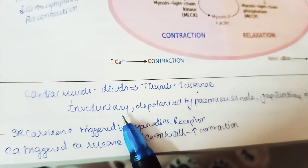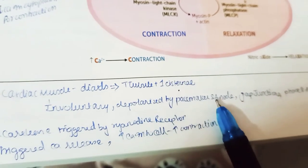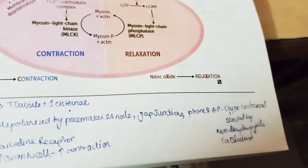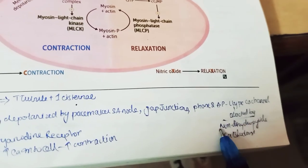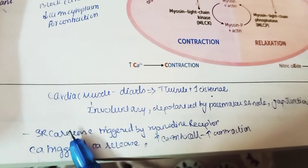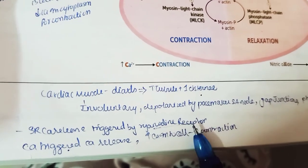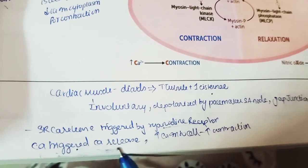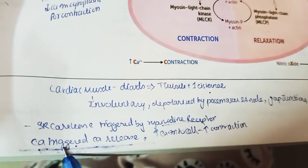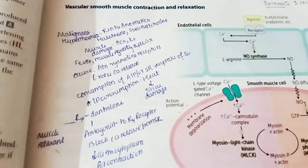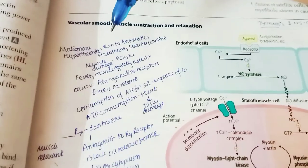Cardiac muscle has dyads: one T-tubule and only one terminal cistern (unlike skeletal muscle's triad with two). Cardiac muscle is involuntary, depolarized by the SA node pacemaker, and has gap junctions. Phase 2 of the cardiac action potential is due to L-type calcium channels, which can be blocked by non-dihydropyridine calcium channel blockers. Calcium-induced calcium release is triggered by the ryanodine receptor.